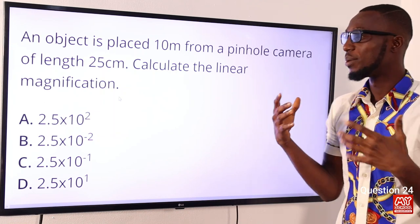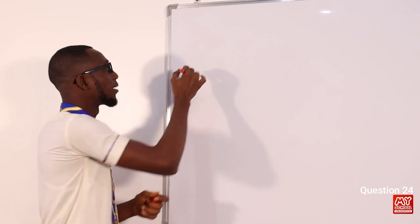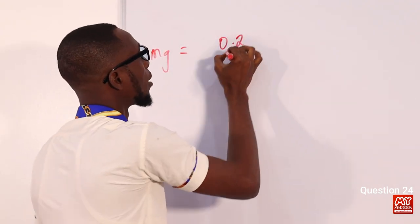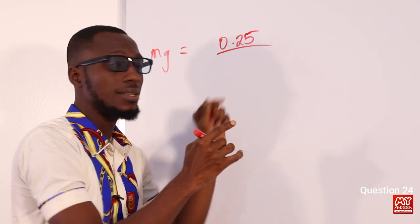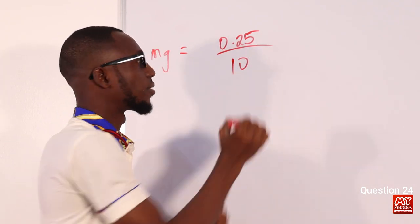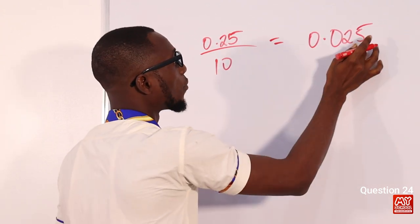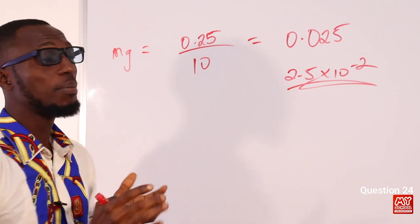Question 24: An object is placed 10 m from a pinhole camera of length 25 cm. Calculate the linear magnification. Magnification = image distance / object distance = 0.25 m / 10 m = 0.025, which in standard form is 2.5 × 10⁻². The correct option is option B.